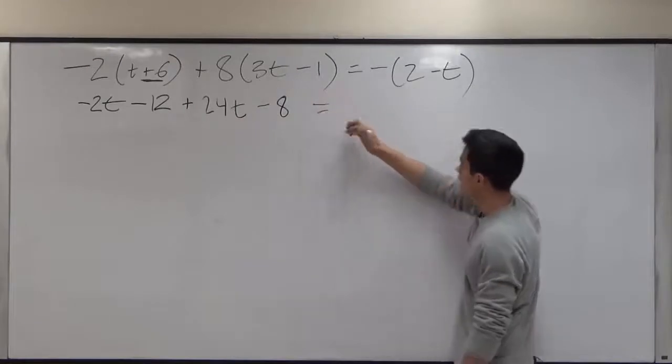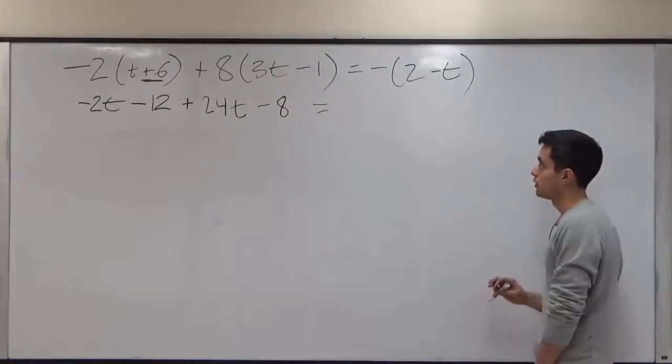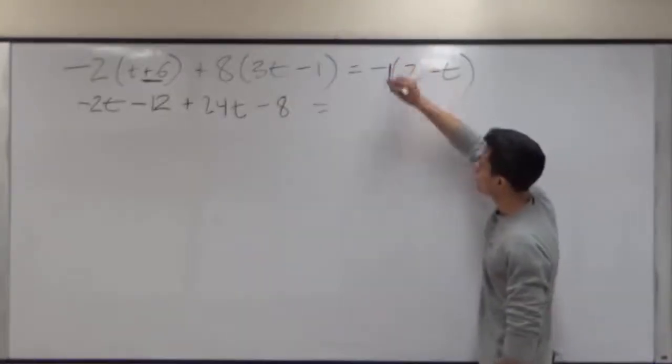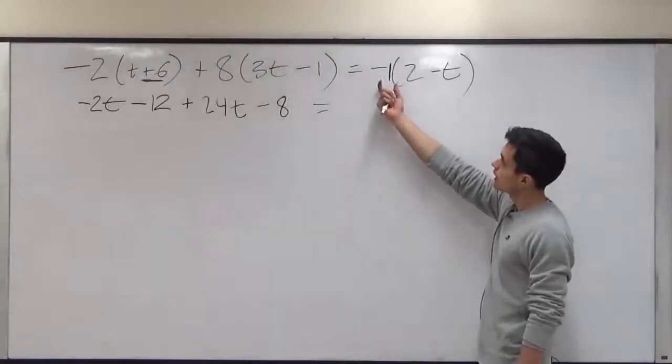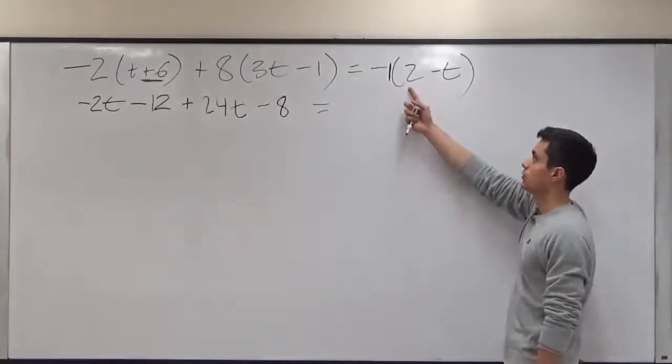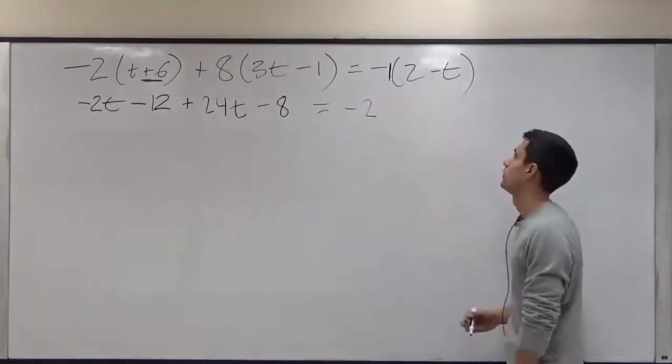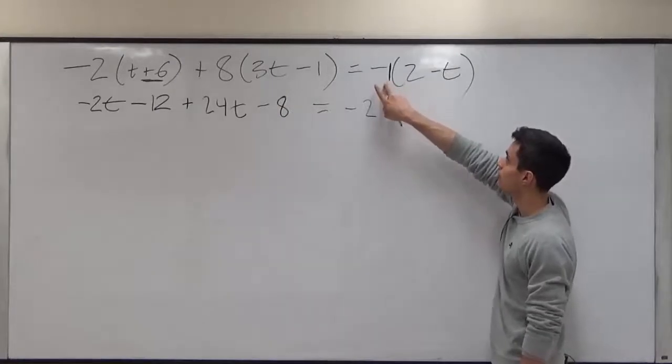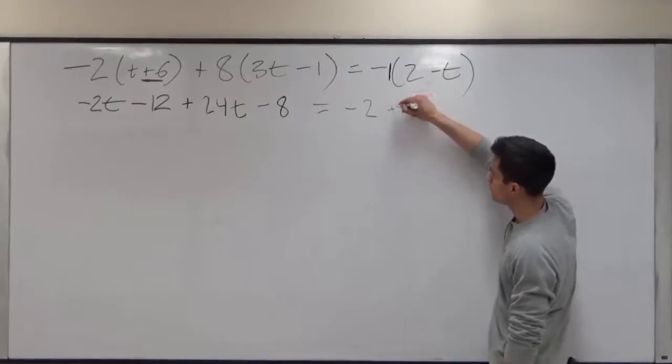After this, we then have to open up the parentheses for this side. Let's pretend here there is an imaginary 1. So now what we have to do is negative 1 times 2, which will then just give us negative 2. Then we have to multiply this imaginary 1, negative 1, times negative t, which will give us positive t.